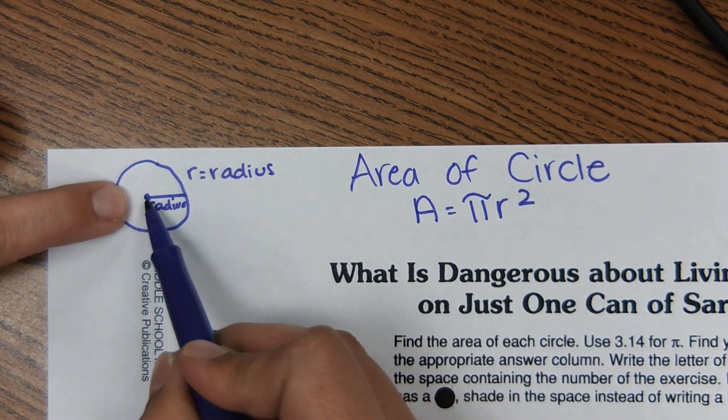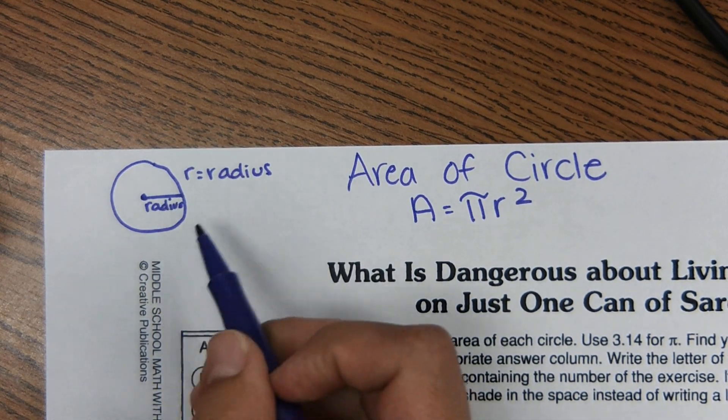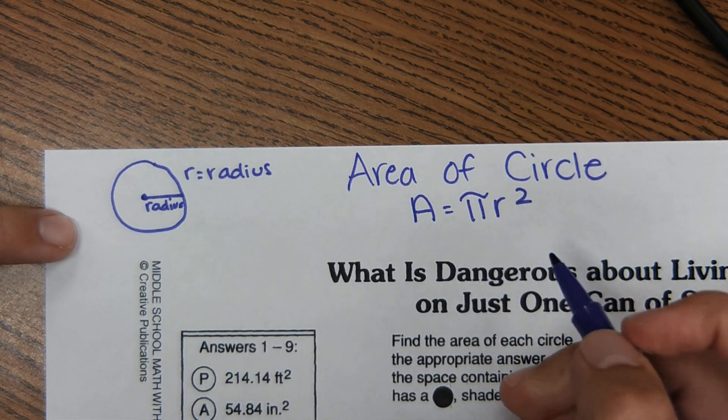So for some of these problems, they're going to give you the length halfway across the circle, which is R, which we'll get plugged into here.